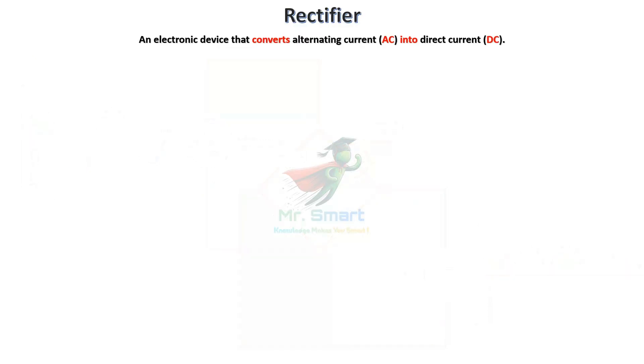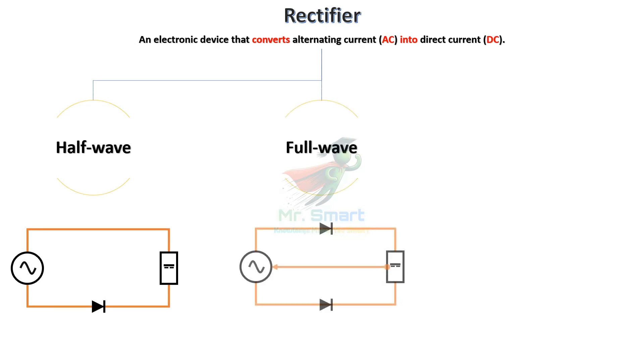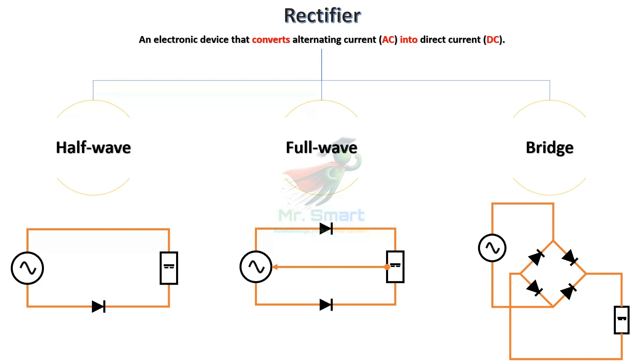The rectifiers are generally of three types: half-wave, full-wave, and bridge rectifiers. Each has unique features and applications.